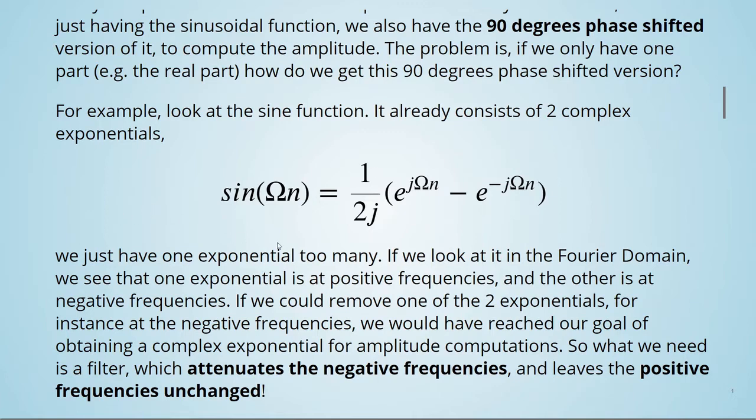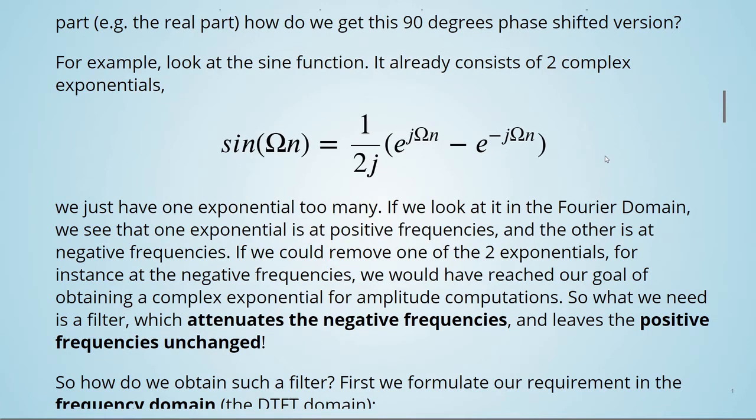We just have one exponential too many. If we look at it in the Fourier domain, we see that one exponential is at positive frequencies and the other is at negative frequencies.